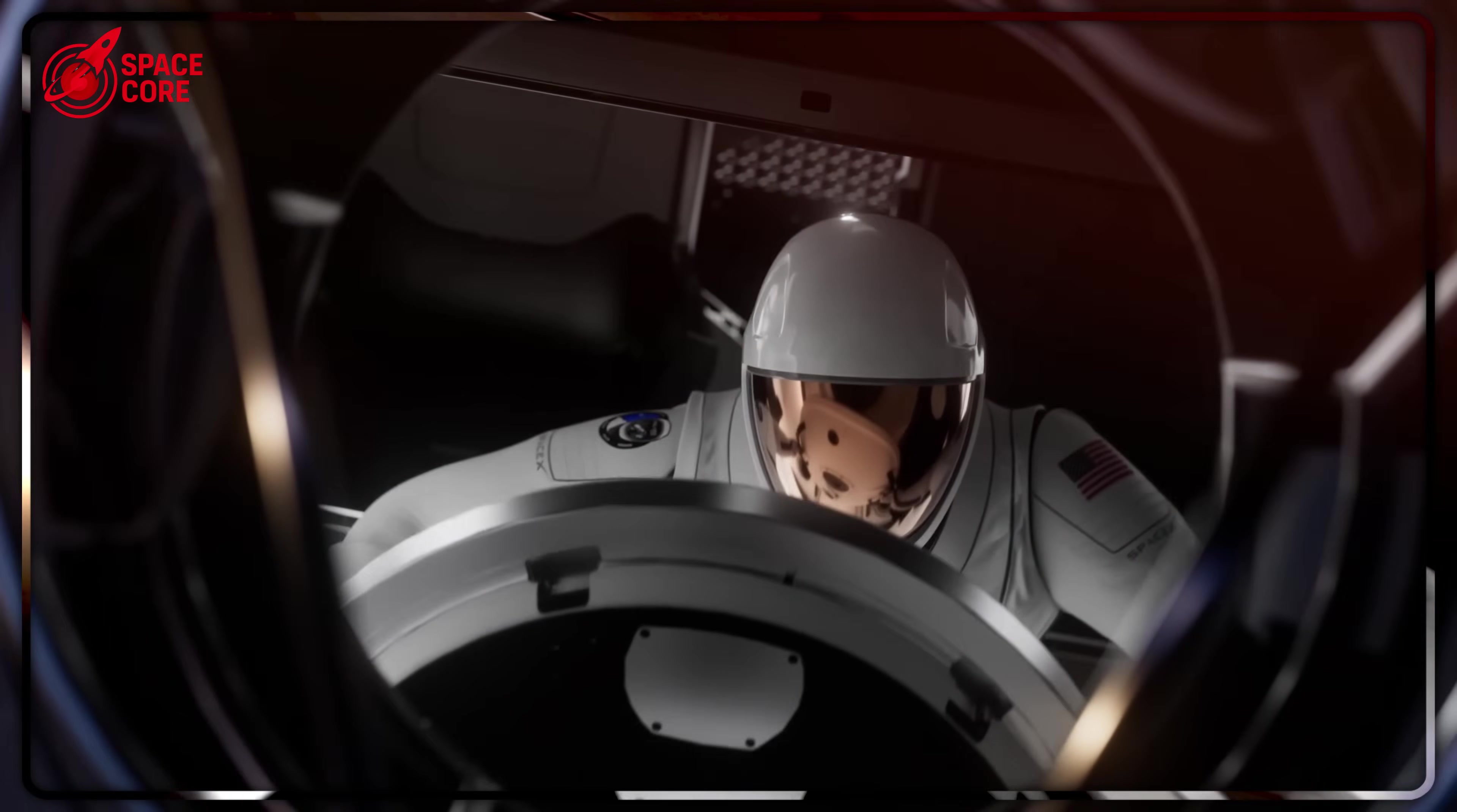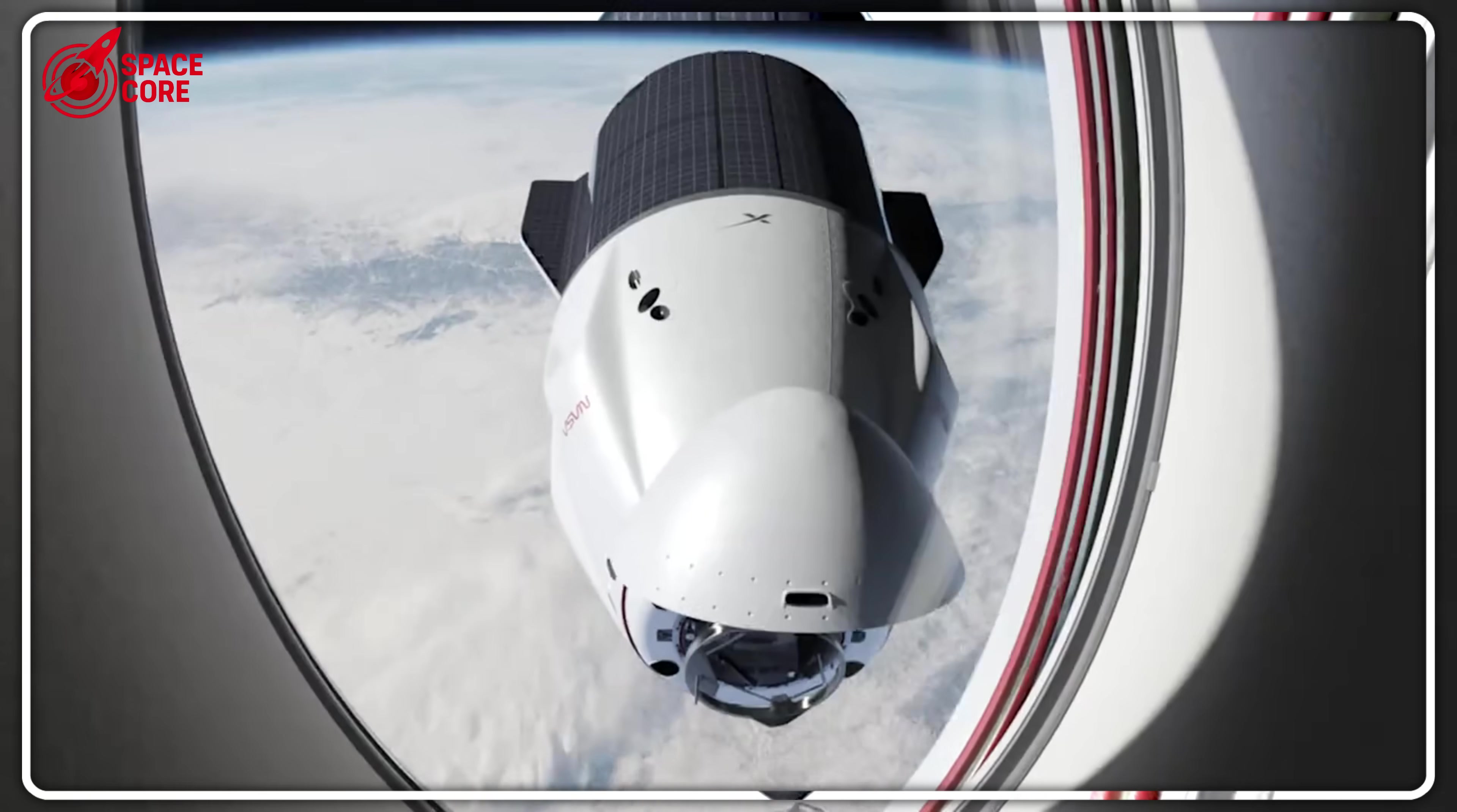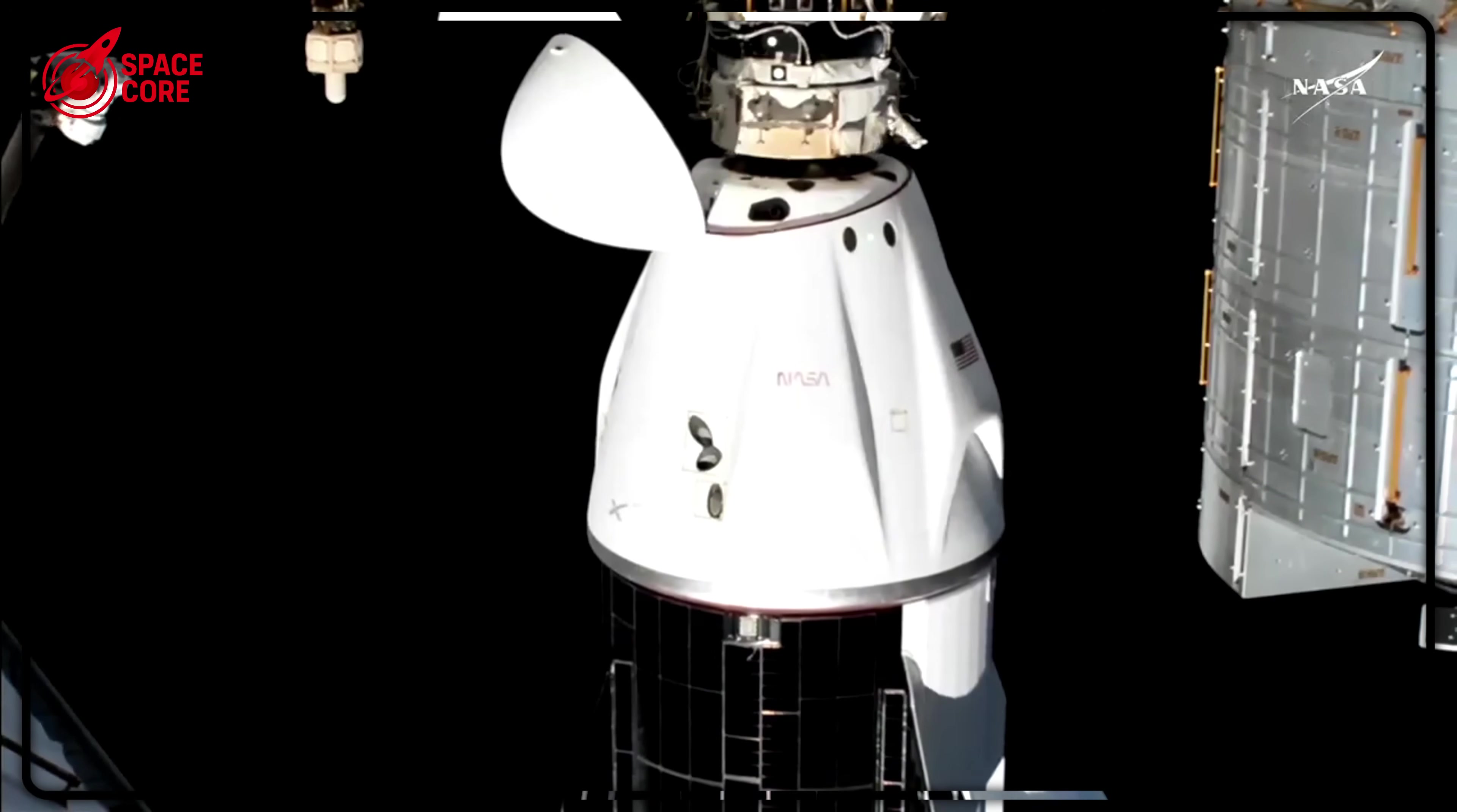This compromise has worked flawlessly since 2019. Dragon's parachute system has never failed. Dozens of astronauts have safely returned via ocean splashdown. Mission accomplished, right? Dead wrong. Because while SpaceX was perfecting parachute landings, Musk was secretly developing something that would make Dragon completely obsolete.